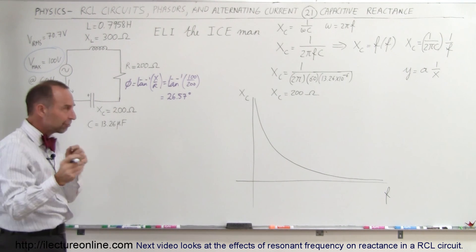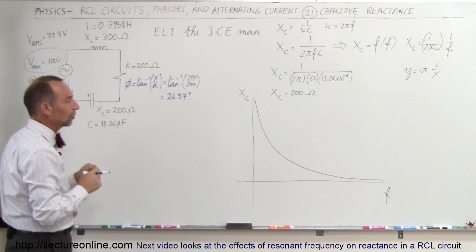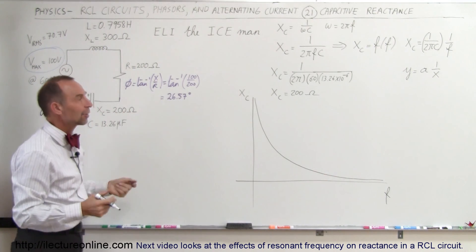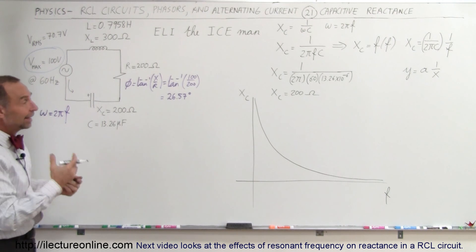Therefore, the capacitor cannot fully charge and doesn't offer much opposition to the current. Higher frequencies mean low reactance; lower frequencies mean higher reactance. That's what capacitor reactance looks like in an RCL circuit.